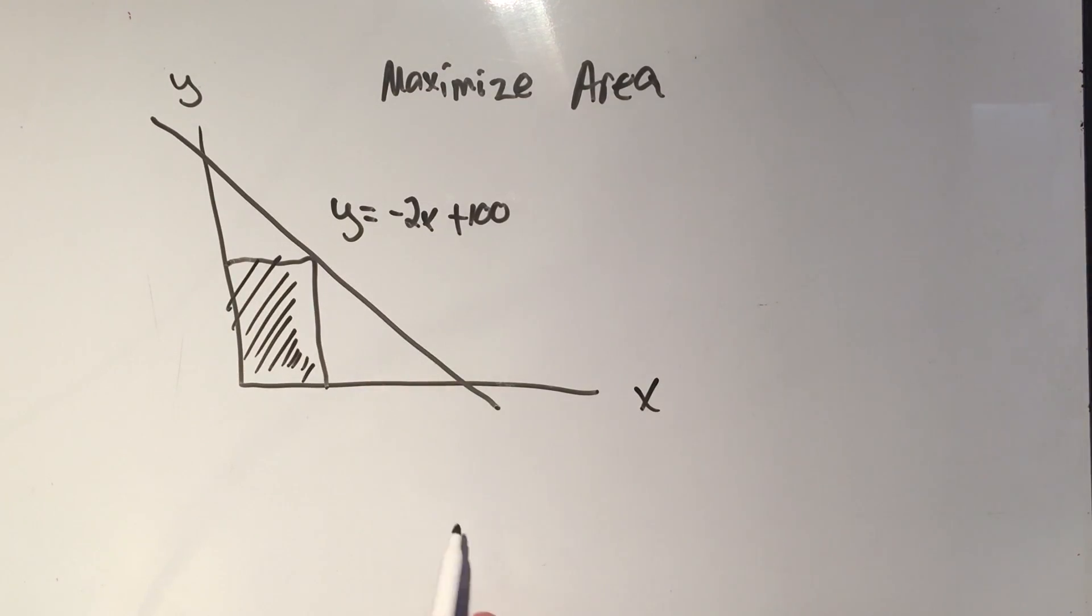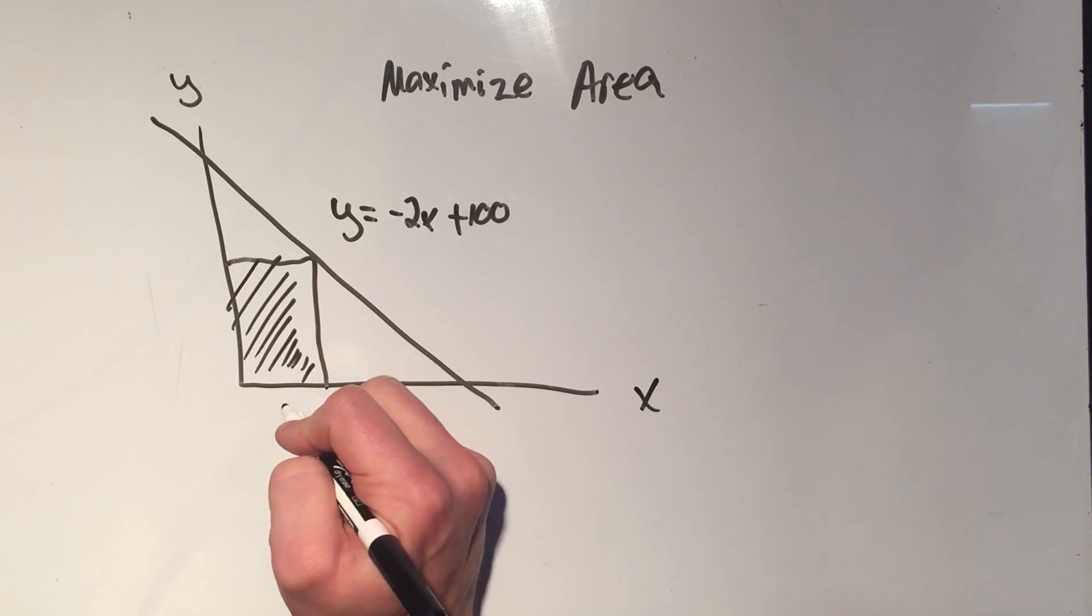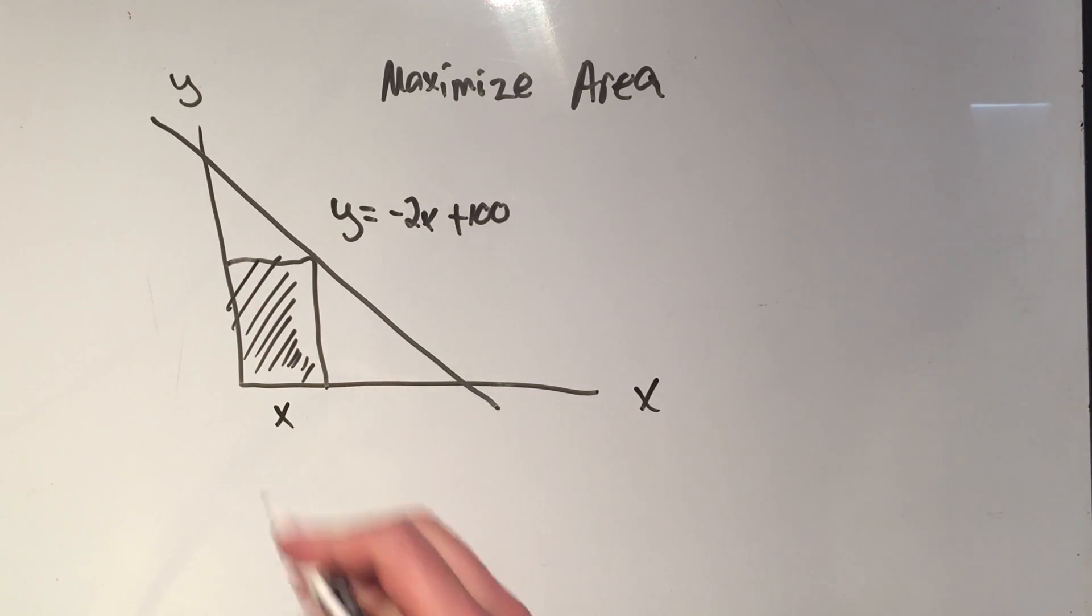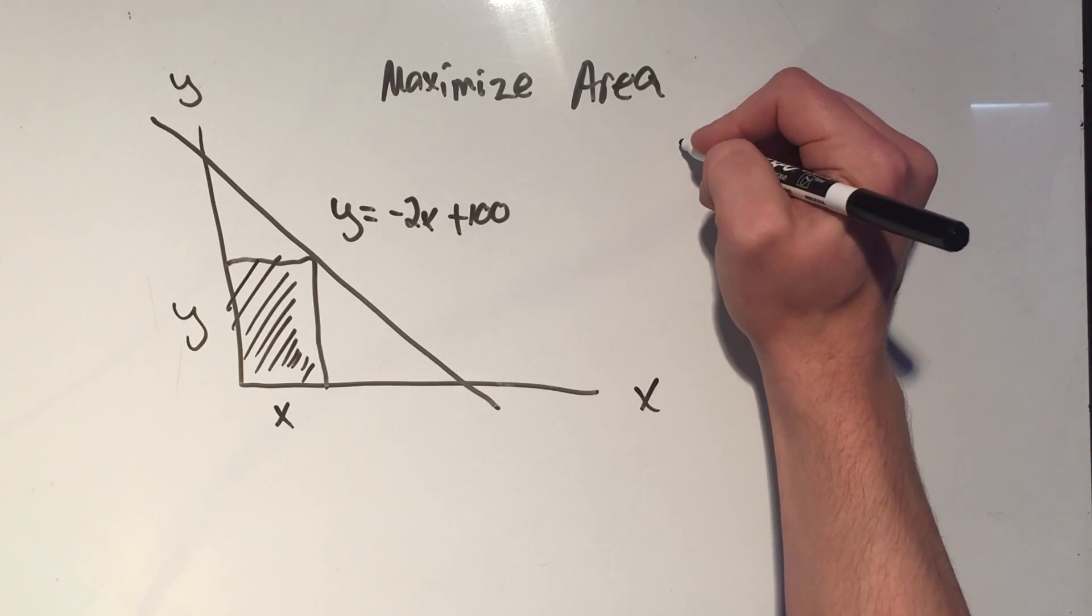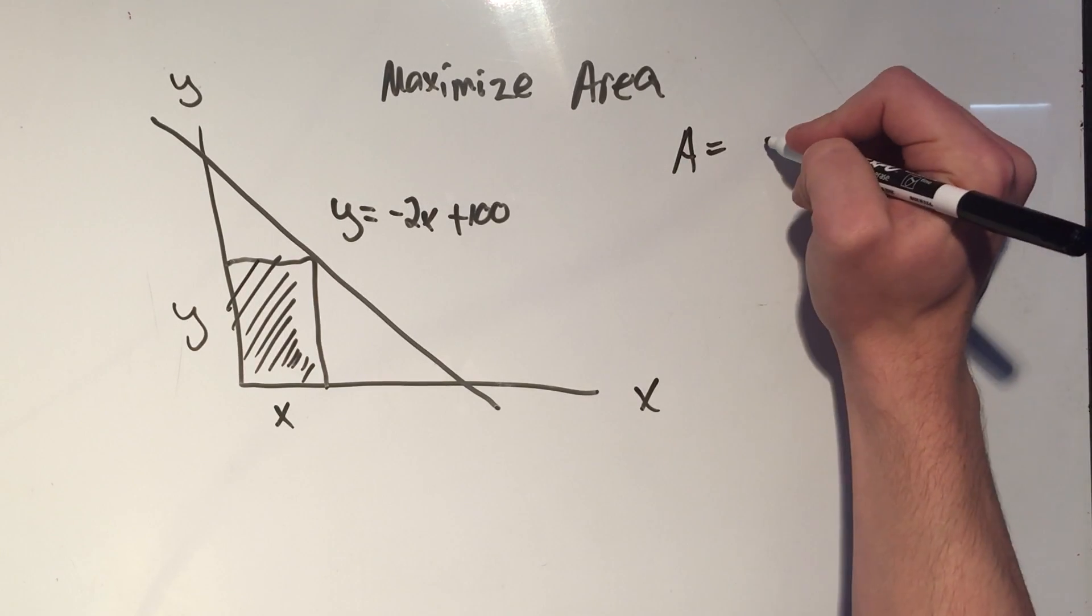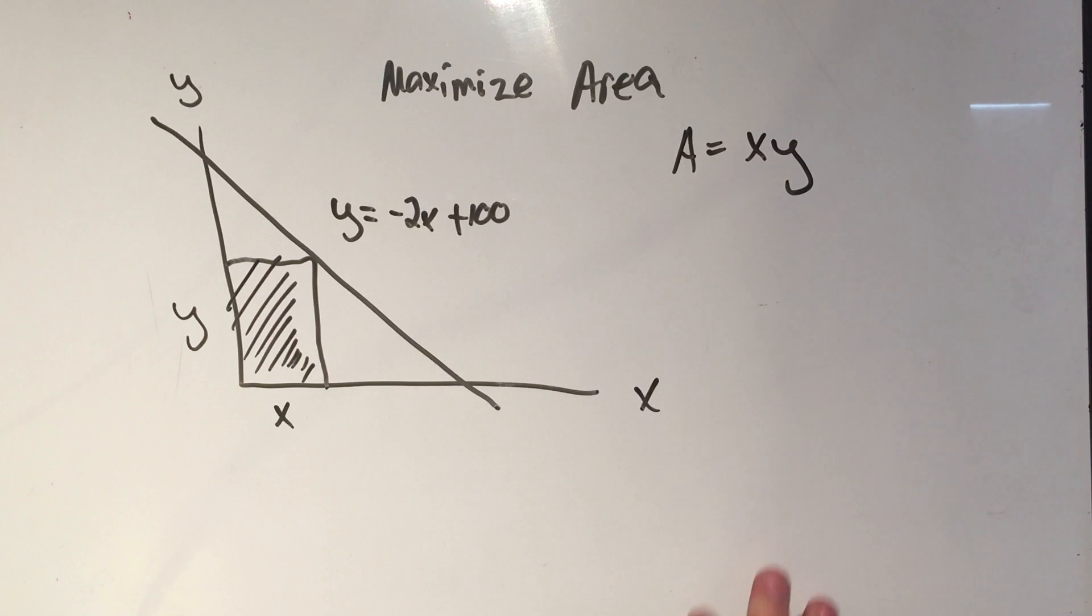What's the area of this rectangle? Area of a rectangle is length times width. What's the length and the width? Well, I don't really know. All I know is it's x in this direction and y in that direction. So the thing that I want to maximize, the thing that I want to take the derivative of, is x times y. That's the area of the rectangle.